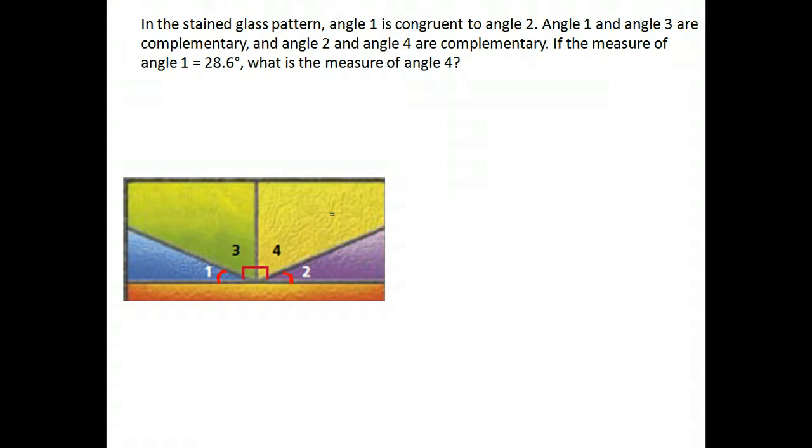Angle 1 and angle 3 are complementary. I can see that angle 1 and angle 3 are complementary because they form a right angle together, so together they are 90 degrees. Angle 2 and angle 4 are also complementary. Again, we can see in the drawing that they make a 90 degree angle together.